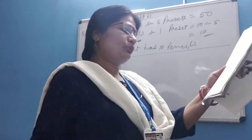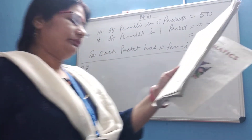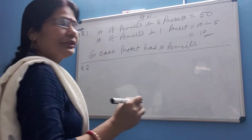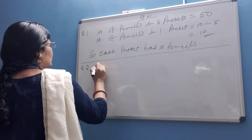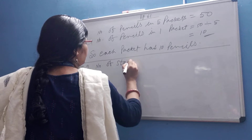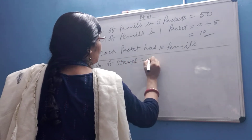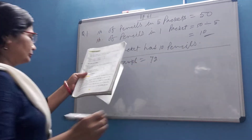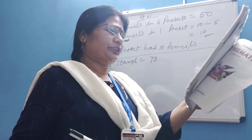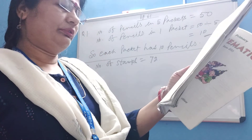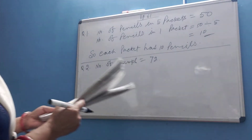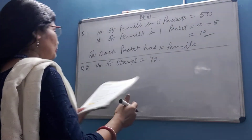Raju has 72 stamps. He pastes 8 stamps in each piece of scrapbook. How many pieces are used by Raju? Number of stamps is equal to 72.